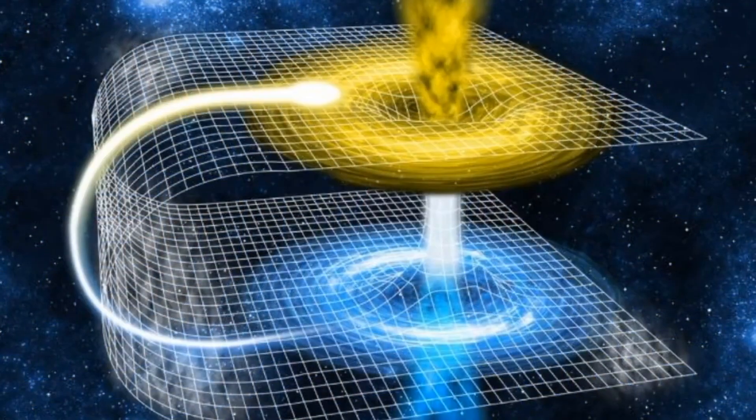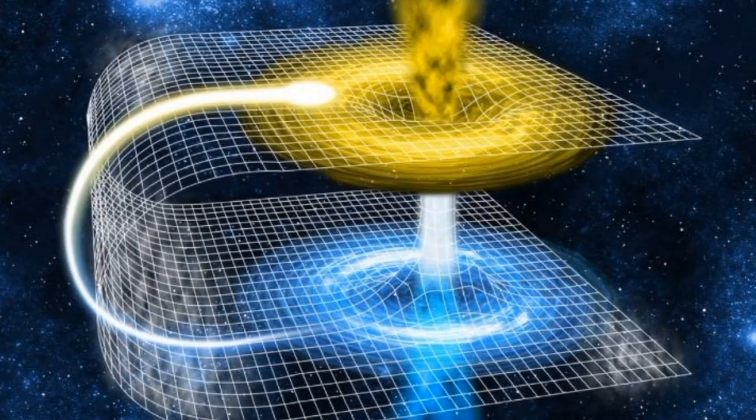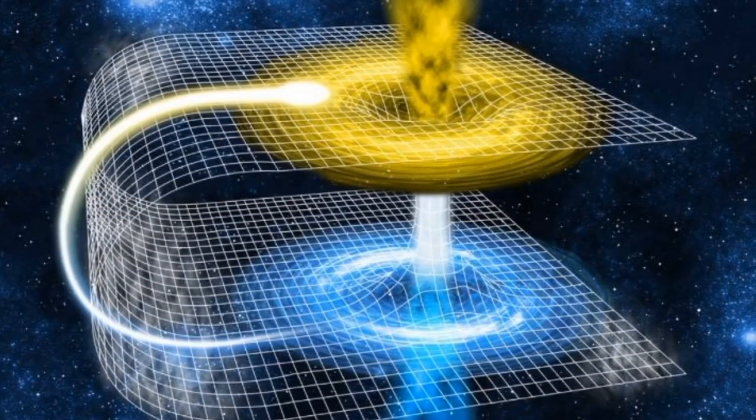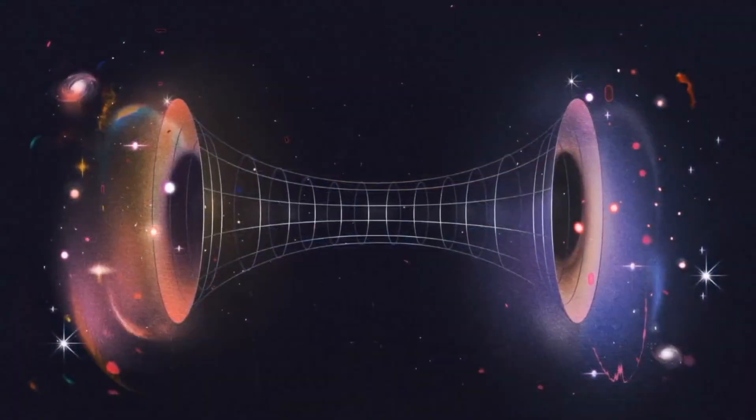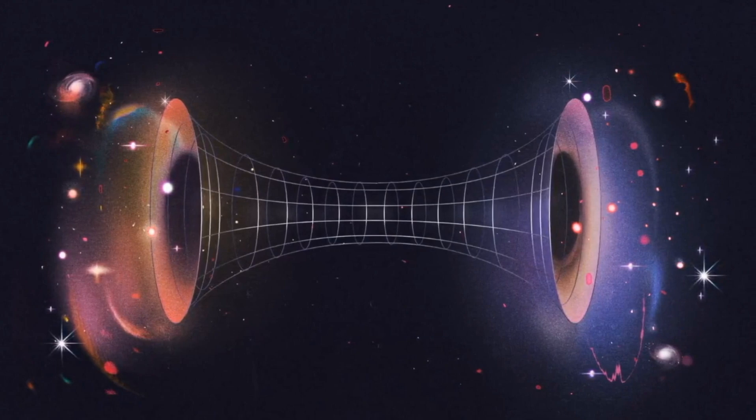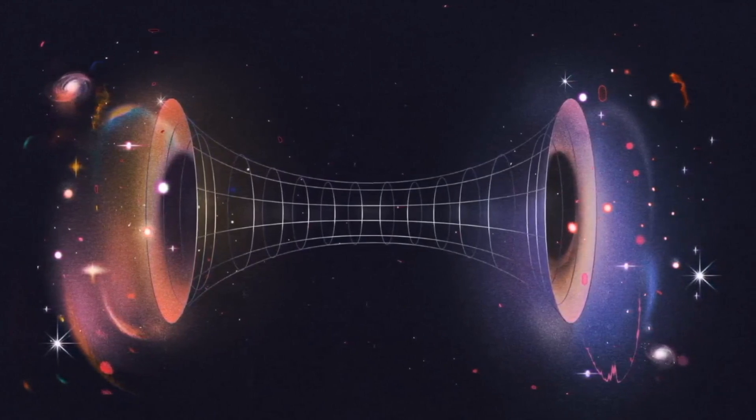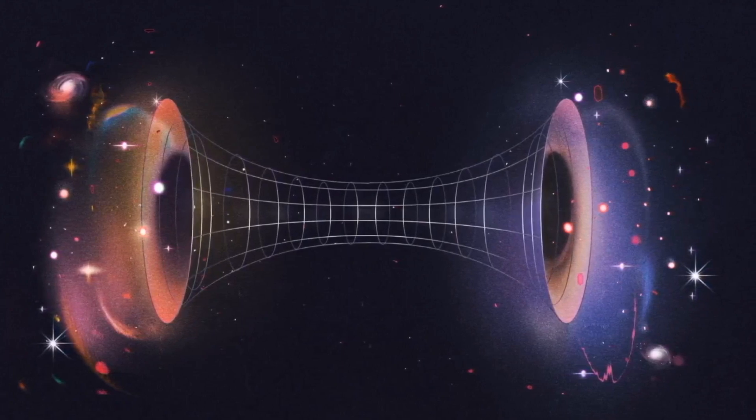As we navigate these theoretical waters, the text contemplates the intriguing idea of a wormhole bridge connecting black holes and white holes, proposing a unified cosmic phenomenon. This speculative bridge hints at the tantalizing possibility that matter falling into a black hole might emerge from a white hole in a different cosmic epoch or even a distinct universe, threading the fabric of space-time across cosmic scales.